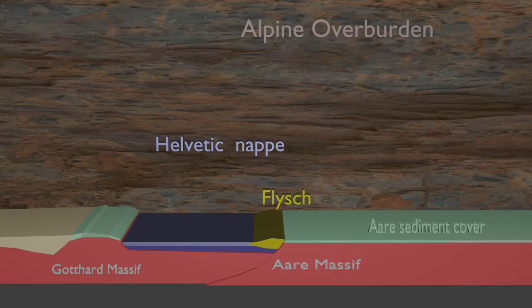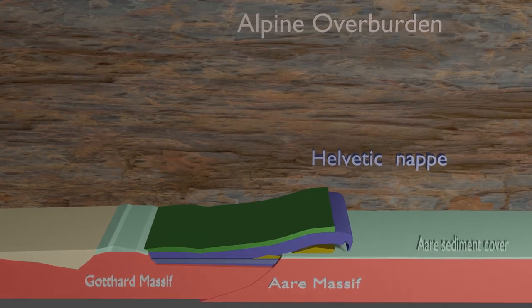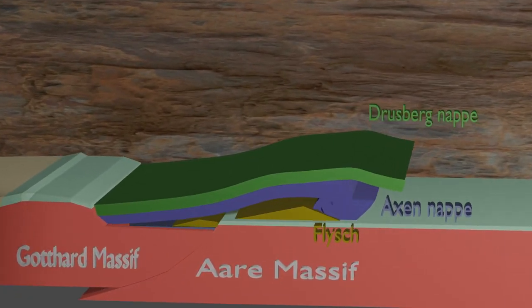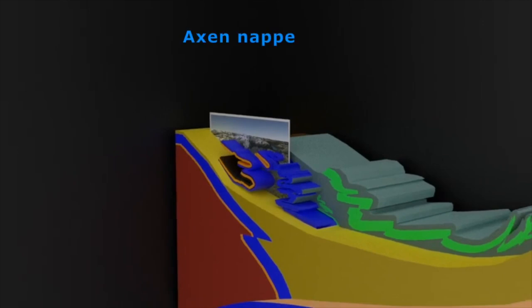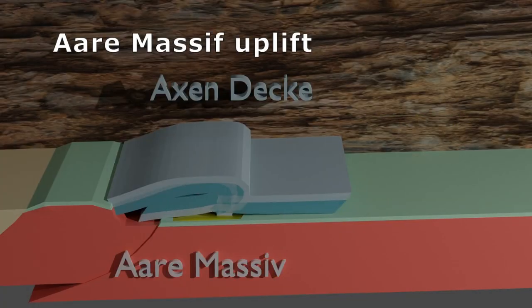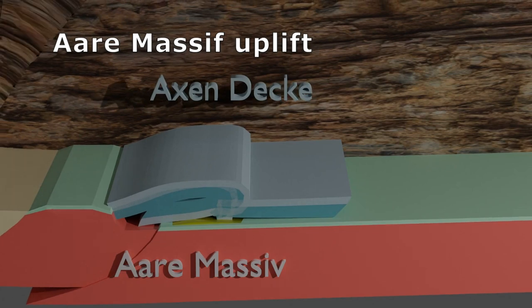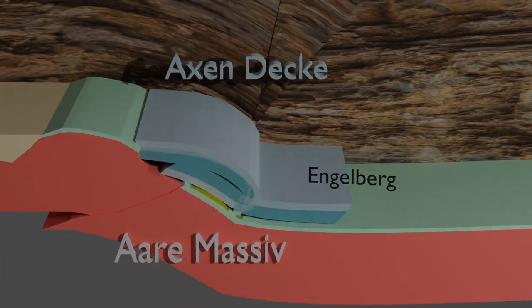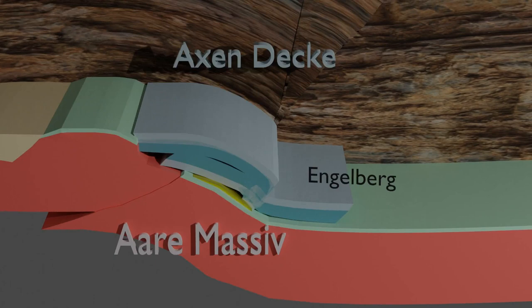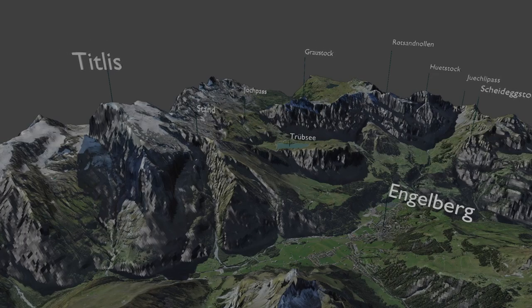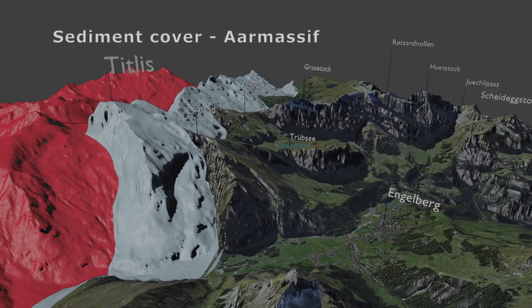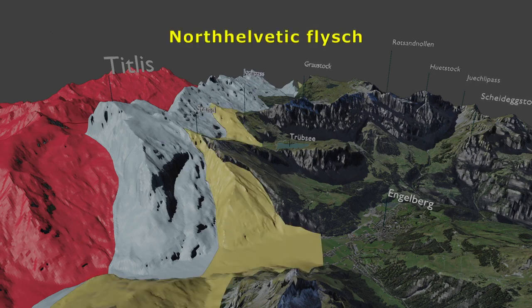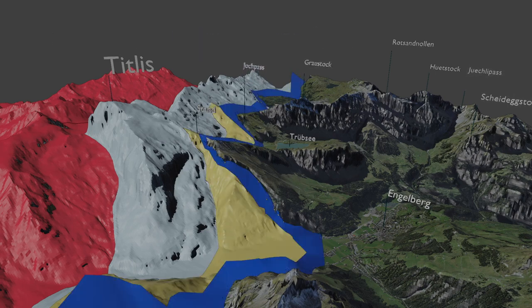The Helvetic nappe originated from a sedimentary basin situated 30 km to the south between the Gotthard and the Aar Massif. It was pushed northward over the Aar Massif, overriding the Helvetic Flysch, then split into two distinct units: the Axen nappe and the Rußberg nappe. Both were subsequently exhumed through the uplift of the Aar Massif. Looking towards Mount Titlis, we see the granitic basement of the Aar Massif and its Triassic to Tertiary sediment cover, the Helvetic Flysch unit, the Helvetic overthrust, and the six major thrust units of the Axen nappe.